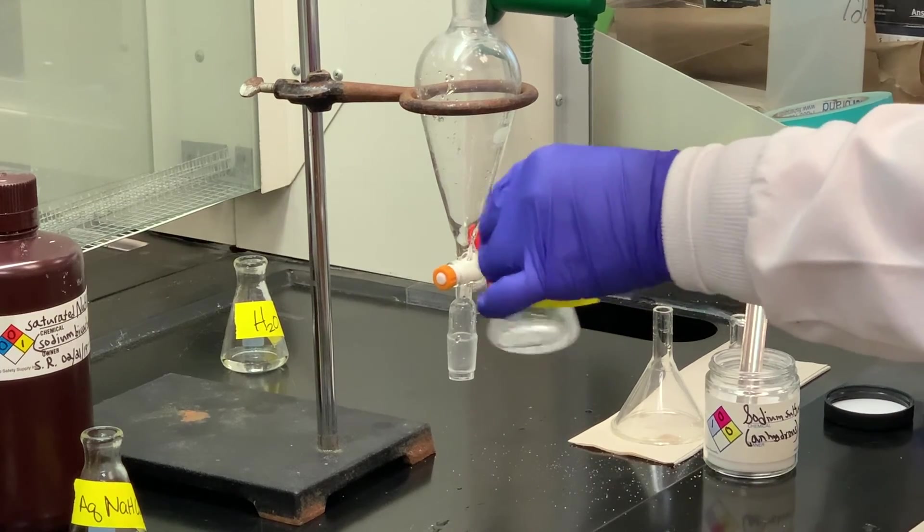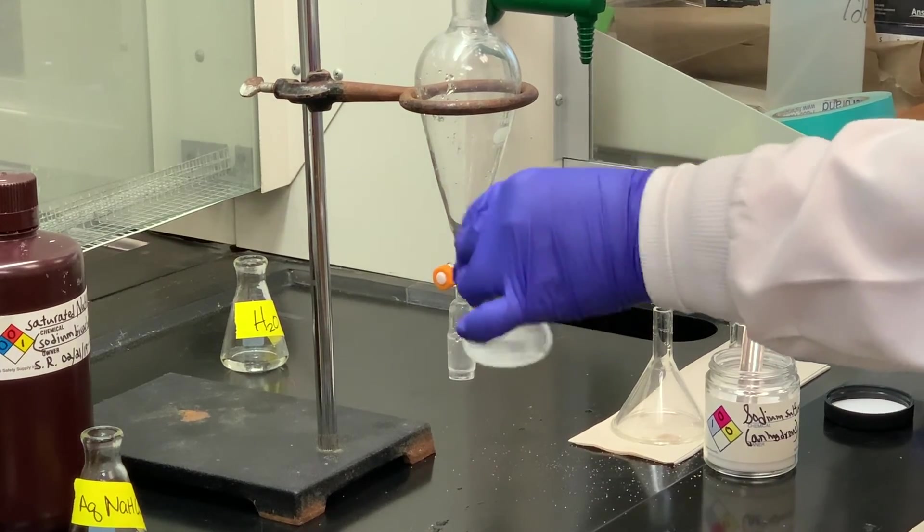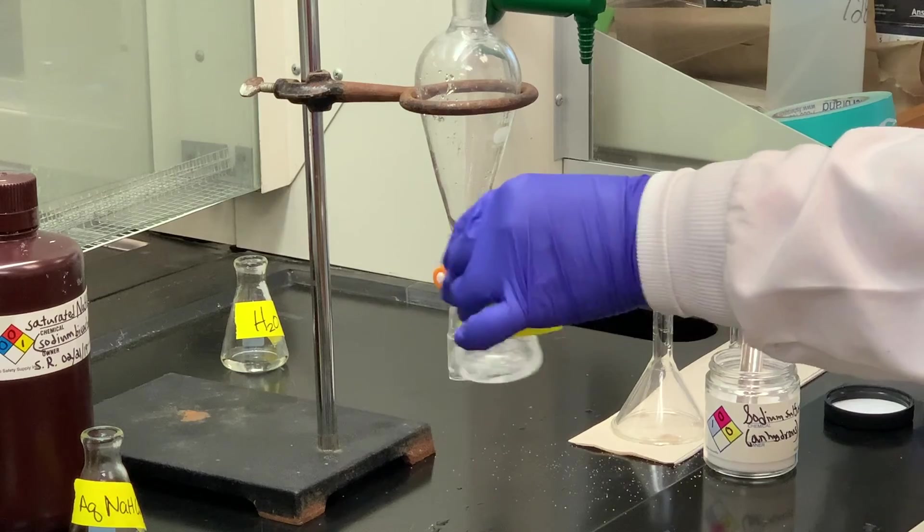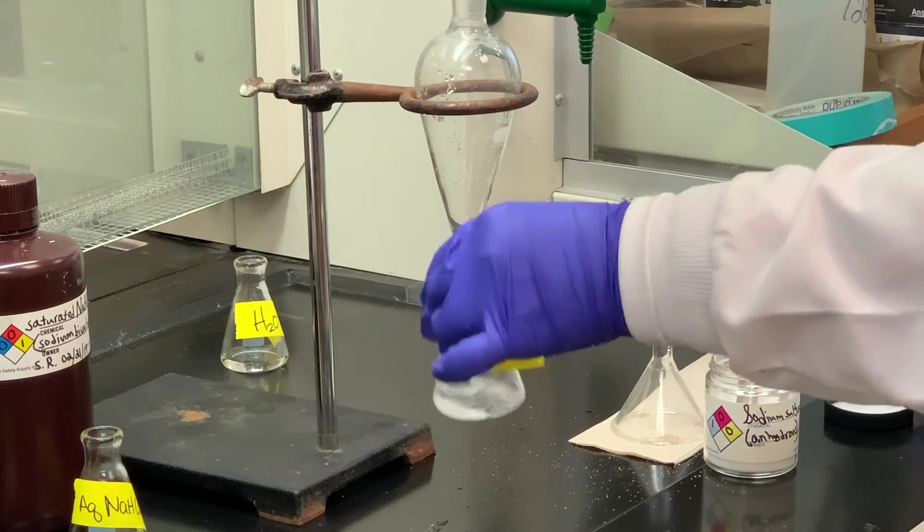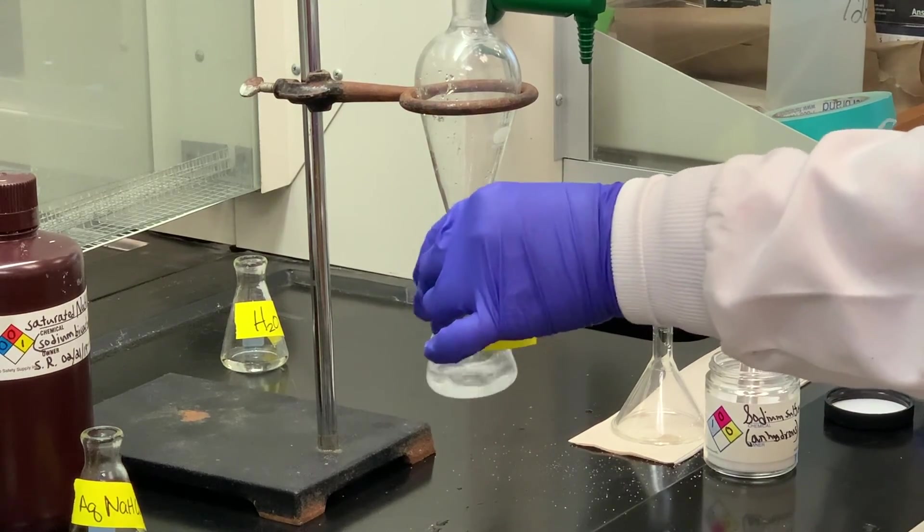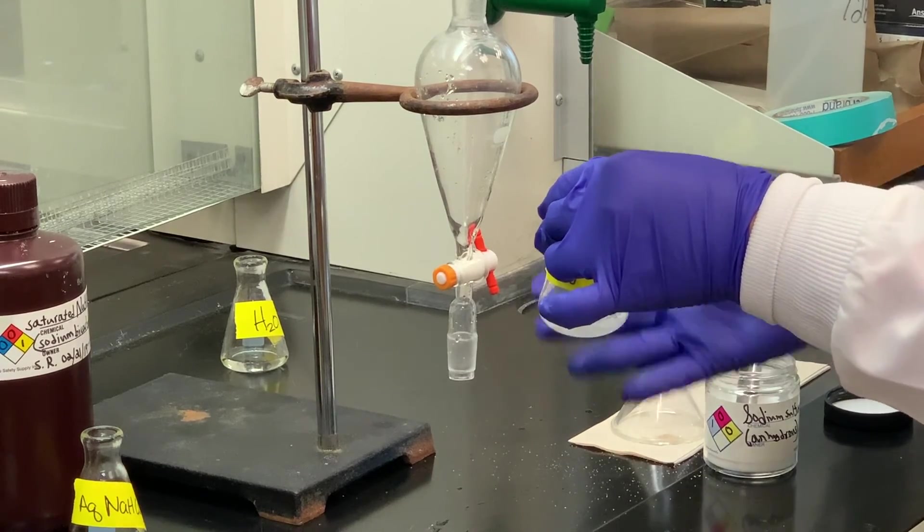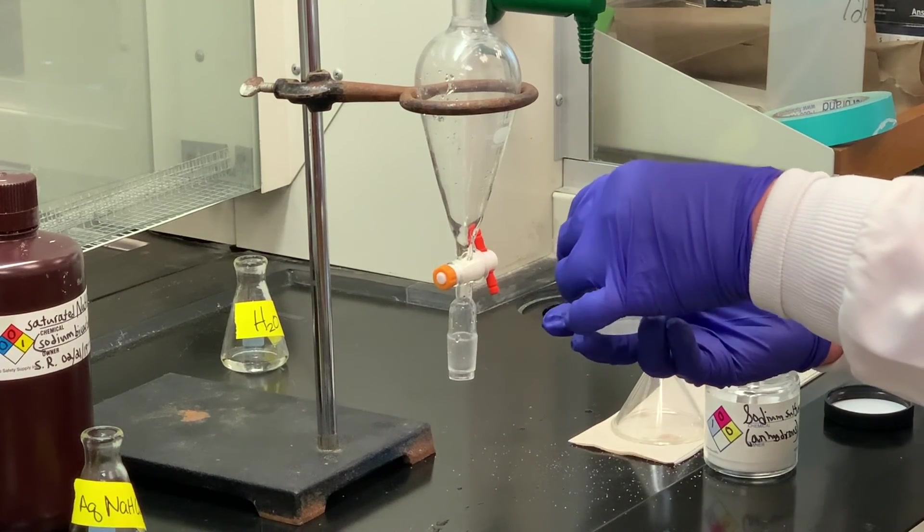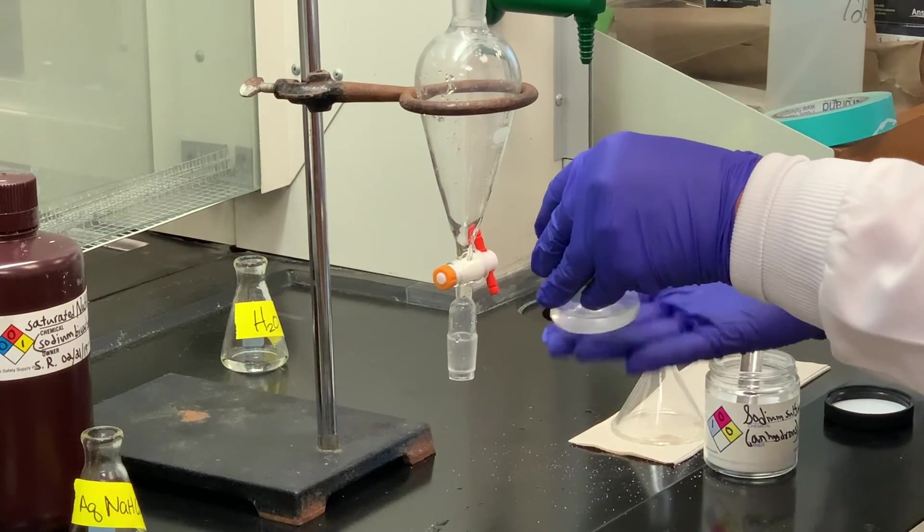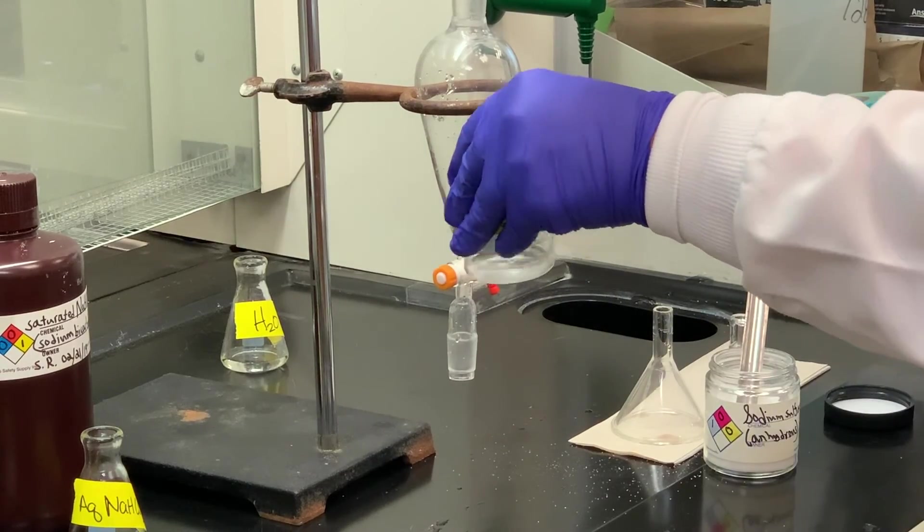So what I'm going to do, I'm going to swirl it to make sure everything comes in contact with the drying agent. I'm going to let that sit for about 10 minutes, and then we will filter. I'll use a cotton plug. We'll pipette this liquid through a cotton plug, and then we'll be able to determine how much of the material we recover.